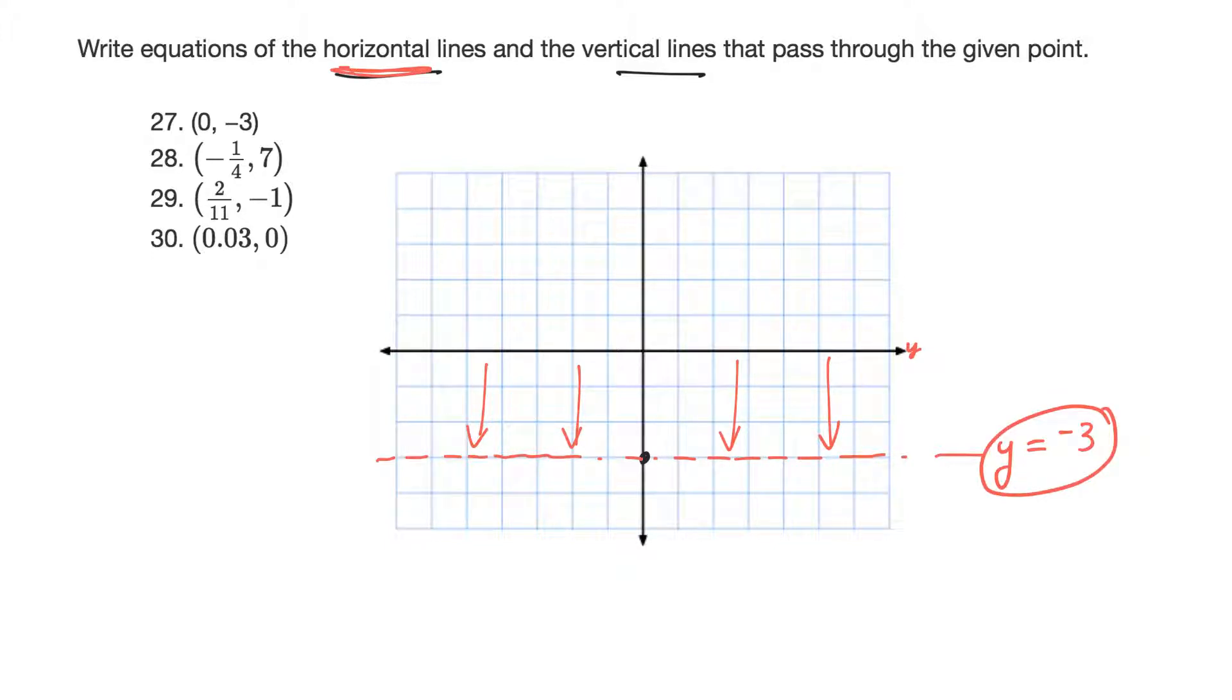Now, a vertical line that goes through that same point would be this line here. And a vertical line is always x is equal to something. And in this case, x doesn't move left or right, so x would be equal to 0.